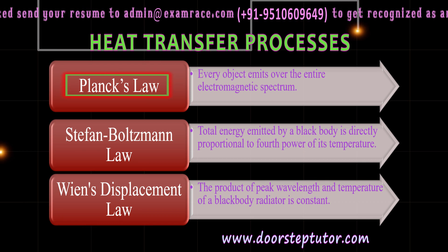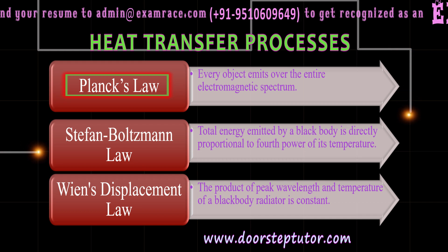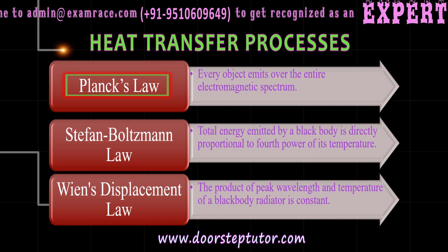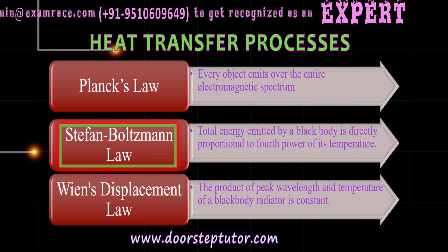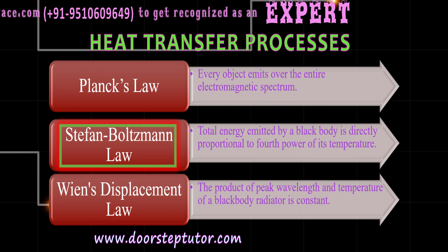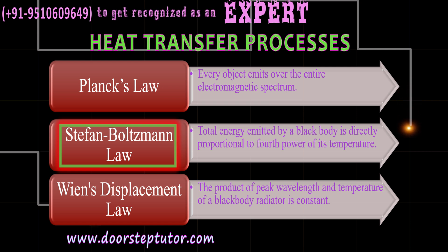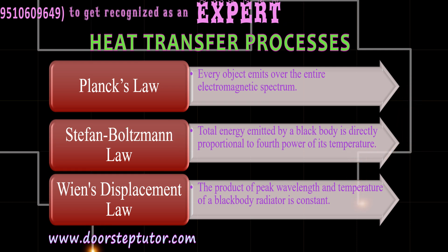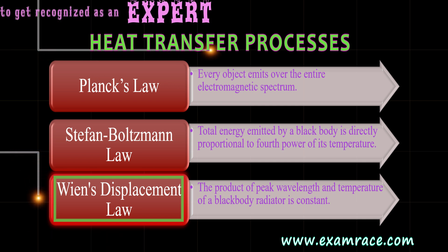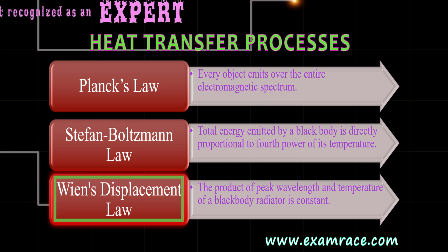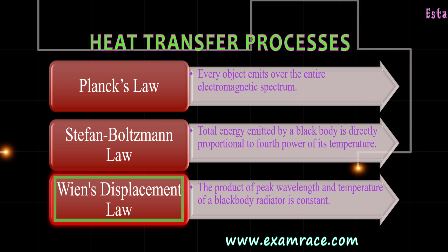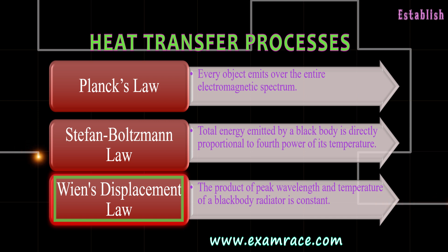Planck's law states that every object emits radiation over the entire electromagnetic spectrum, that is, every object emits radiation at all wavelengths. Stefan-Boltzmann's law states that total energy radiated by a black body is directly proportional to the fourth power of its temperature. Wien's displacement law states that the product of peak wavelength and temperature of a black body is constant, equal to 2.898 × 10⁻³ meter Kelvin.